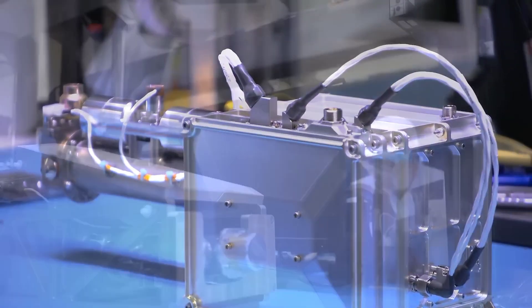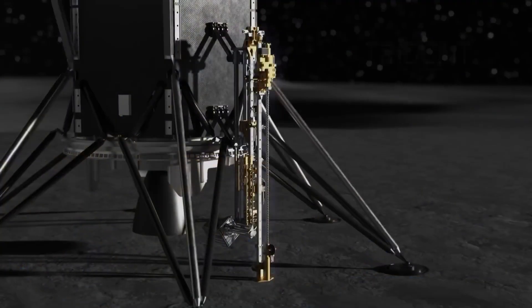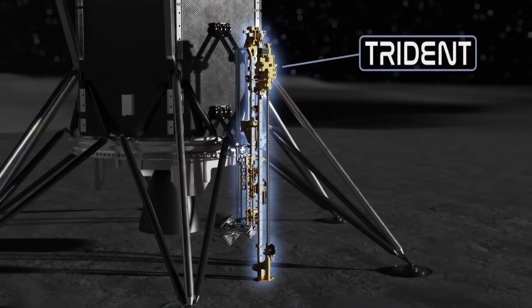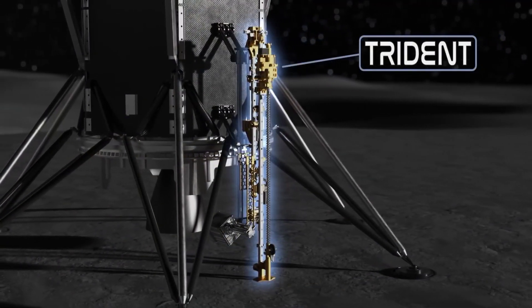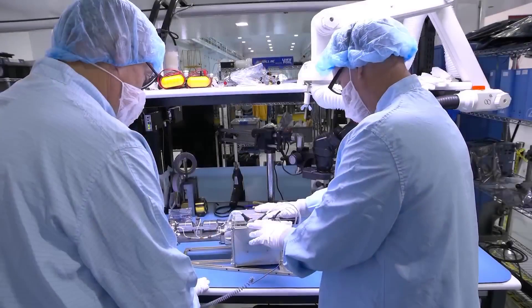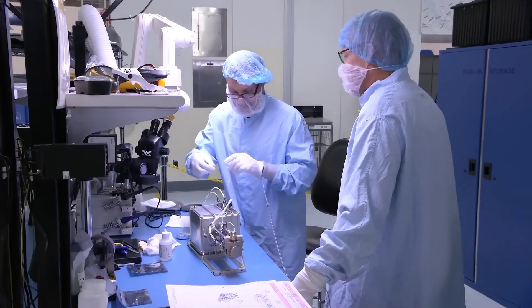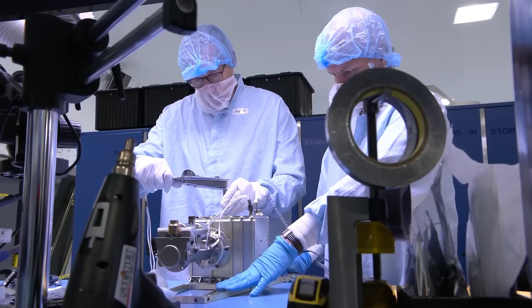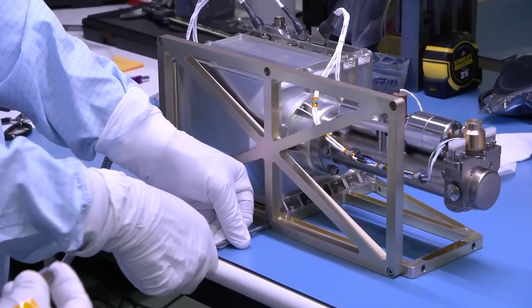PRIME-1 is the combination of two instruments: a drill built by Honey Bee Robotics called Triton, which stands for The Regolith Ice Drill for Exploring New Terrain, and the Mass Spectrometer Observing Lunar Operations, or MSOLO, which is a commercially available mass spectrometer from our industry partner Inficon that we have modified for operation in the harsh space environment.